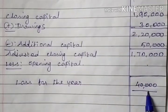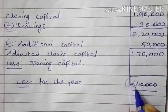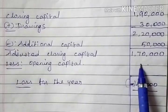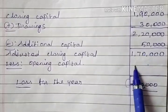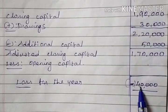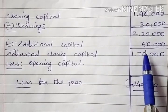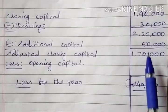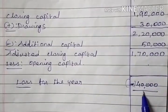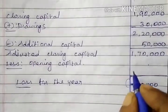The loss is 40,000 — that is a negative balance. If opening capital is more than the adjusted closing capital, it is treated as a loss. Since adjusted closing capital is 1,07,000 and there is a loss of 40,000, opening capital equals 1,07,000 plus 40,000, which is 1,10,000 (approximately 1,010,000 as stated).